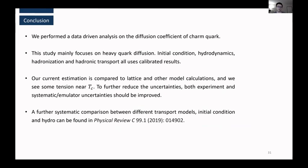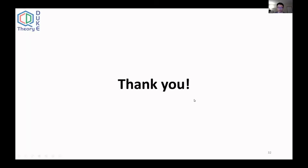And so now comes to my conclusion. We basically performed the data-driven analysis on the diffusion coefficient of charm quarks in heavy ion collisions. And this study mainly focuses on heavy quark diffusion. The initial condition, the hydrodynamics, the hadronization and hadronic transport all uses calibrated results from previous studies. And our current estimation is compared to lattice and other model calculations. And we see some tension near the critical temperature. And I think to further reduce the uncertainties, both the experimental and systematic or emulator uncertainties needs to be improved. And if you want to see a further systematic comparison between different transport models or initial condition and hydro models, you can look into the paper here. And that's all for my talk. Thank you.